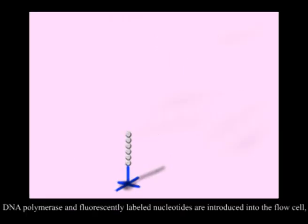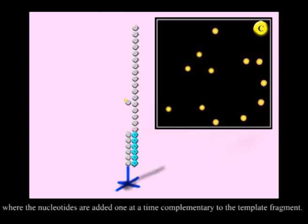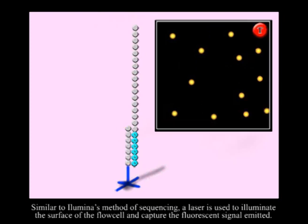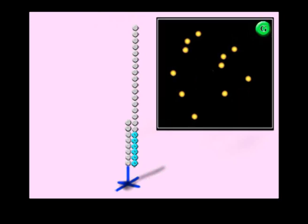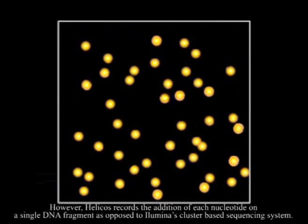DNA polymerase and fluorescently labeled nucleotides are introduced into the flow cell, where the nucleotides are added one at a time complementary to the template fragment. Similar to Illumina's method of sequencing, a laser is used to illuminate the surface of the flow cell and capture the fluorescent signal emitted. However, Helicos records the addition of each nucleotide on a single DNA fragment.